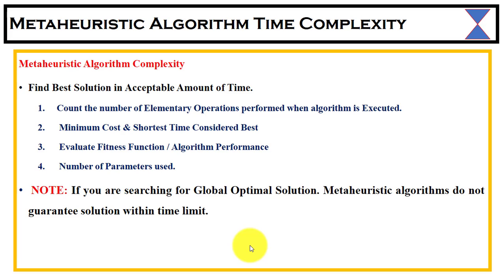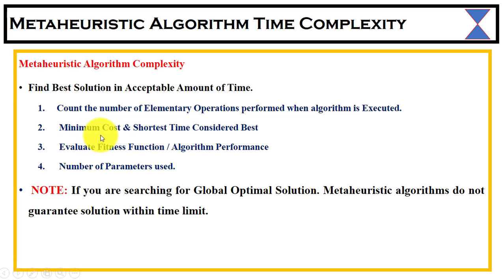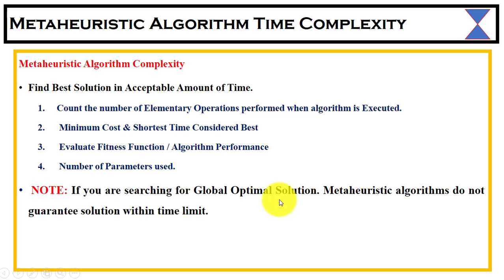Now we have meta-heuristic algorithms. In the case of a meta-heuristic algorithm, we find out the best solution in an acceptable amount of time. To measure its time complexity, you can count the number of elementary operations performed, minimize the cost, and evaluate the fitness function — that is, the algorithm performance — along with the number of parameters used. Note: if you are searching for the global optimal solution, meta-heuristic algorithms do not guarantee a solution within a limited time, so it is difficult to compute exact time complexity.